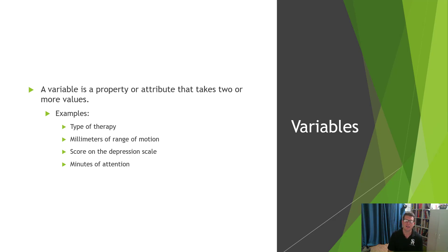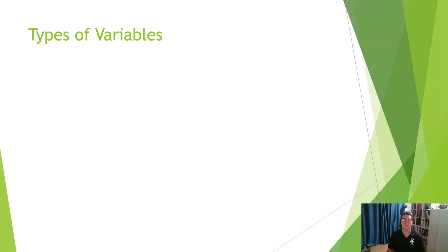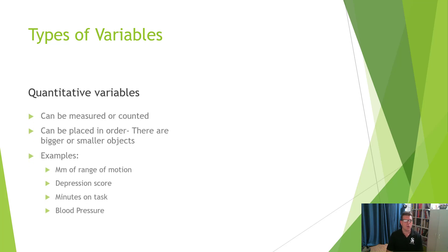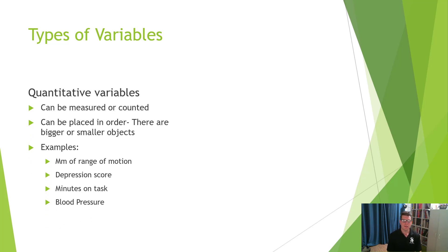Or consider minutes of attention — six minutes, seven minutes, three minutes, eight minutes. We might say something about what those minutes mean, but that's not the value for the variable. Now that we understand what a variable is, let's look at the different types. There are two major types: quantitative variables and categorical variables. A quantitative variable is anything that can be measured or counted — it can be placed in order, with bigger or smaller values.